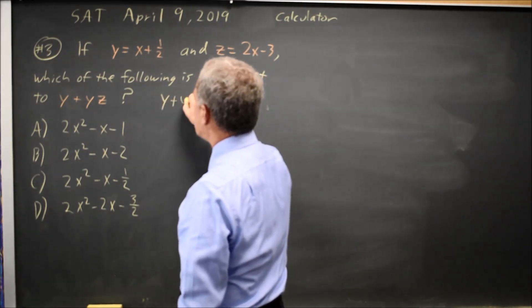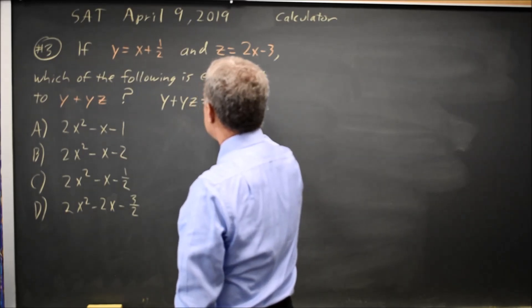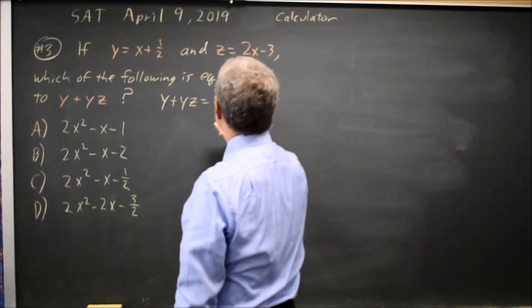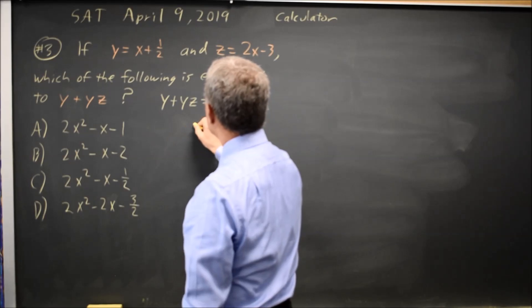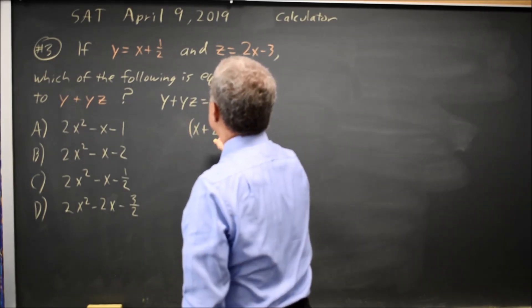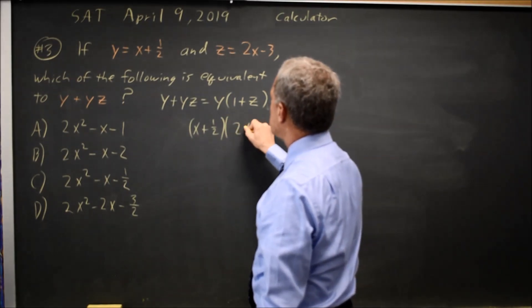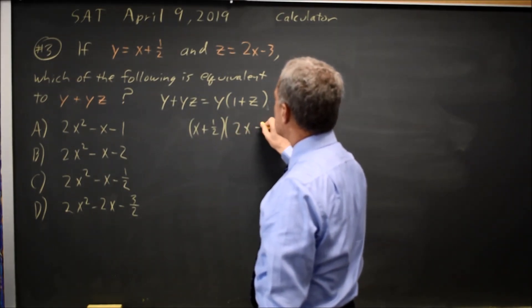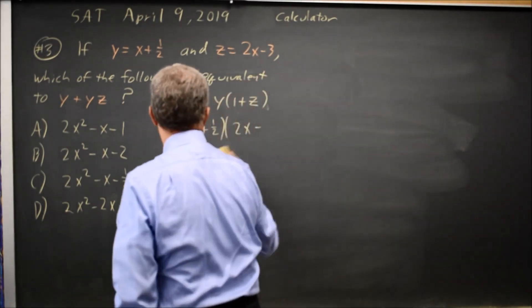If we see that y plus yz equals y times 1 plus z, then y is x plus 1 half. 1 plus z is 2x minus, no, let's write it out.